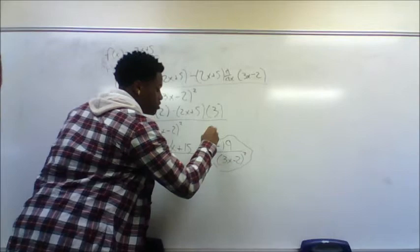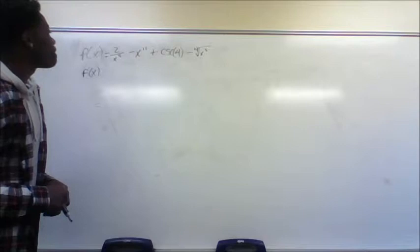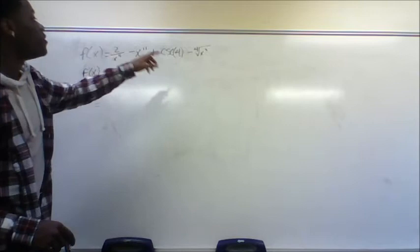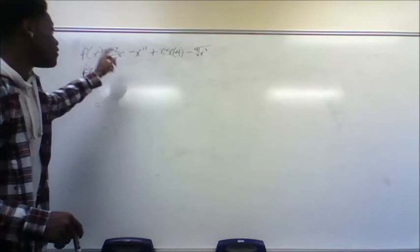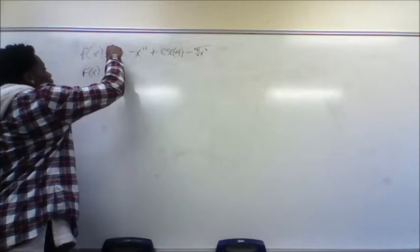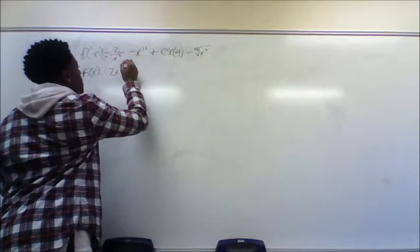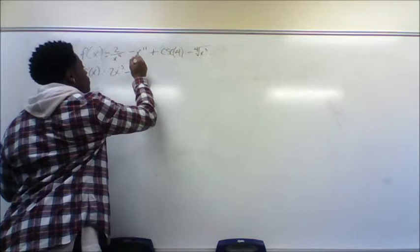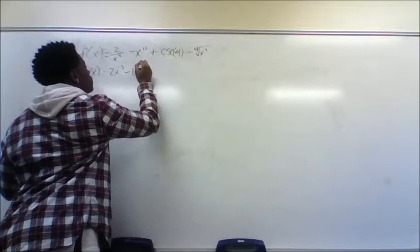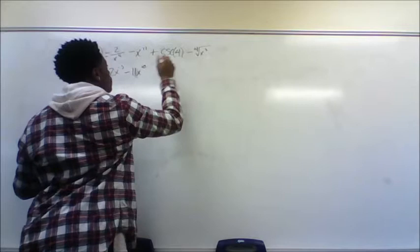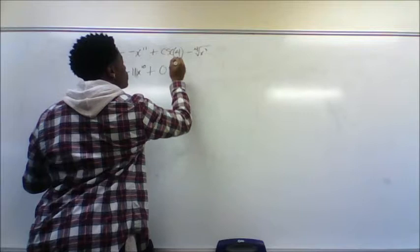My partner will now find the derivative of 2 over x to the 5th, minus x to the 11th, plus cosecant of 4, minus the 4th root of x cubed. For this one I use the derivative sum rule because it's adding and subtracting, and for the sum rule you take the derivative of each function separately. The derivative of each term comes down using the power rule, and the derivative of the constant cosecant of 4 is 0.